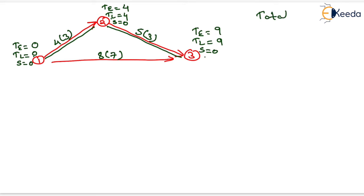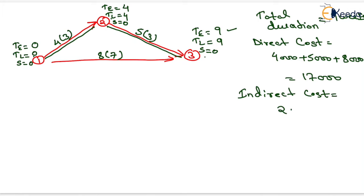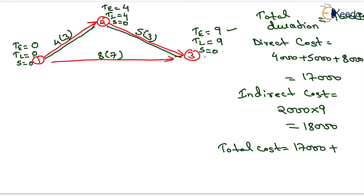The total project duration is 9 weeks. Direct cost equals the sum of all normal costs: 4000 plus 5000 plus 8000, which equals 17,000 rupees. Indirect cost is 2000 per week multiplied by 9 weeks, which equals 18,000 rupees. Total cost equals 17,000 plus 18,000, giving 35,000 rupees as the total cost of this network.